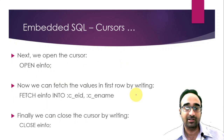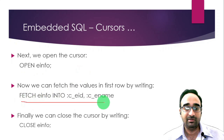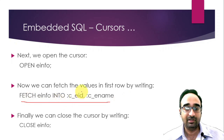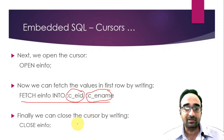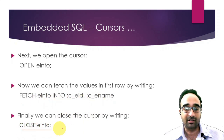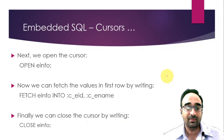After the cursor is created, you open it with 'OPEN e_info'. Then inside a for loop or while loop, you write the FETCH statement, which retrieves one row at a time from the table and stores the values into your C variables 'C_eid' and 'C_ename'. After doing whatever you need with those values, you finally close the cursor with 'CLOSE e_info'. That is it about Embedded SQL.